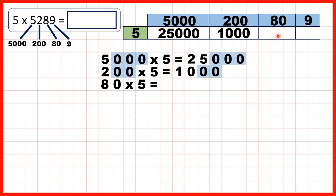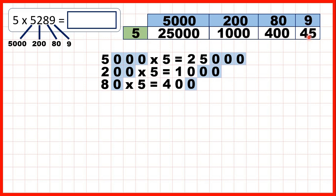Here we need to work out 80 times 5. That's 400 because 8 times 5 is 40 and then we need 1 end zero. And here we need to work out 9 times 5, which is 45.